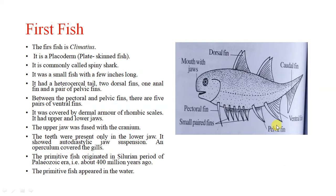You can see here the pelvic fins. It was covered by a dermal armour of rhombic scales. It had upper and lower jaws — mouth-bearing jaws. They were the first gnathostomes. The upper jaw was fused with the cranium, and teeth were present only in the lower jaw.